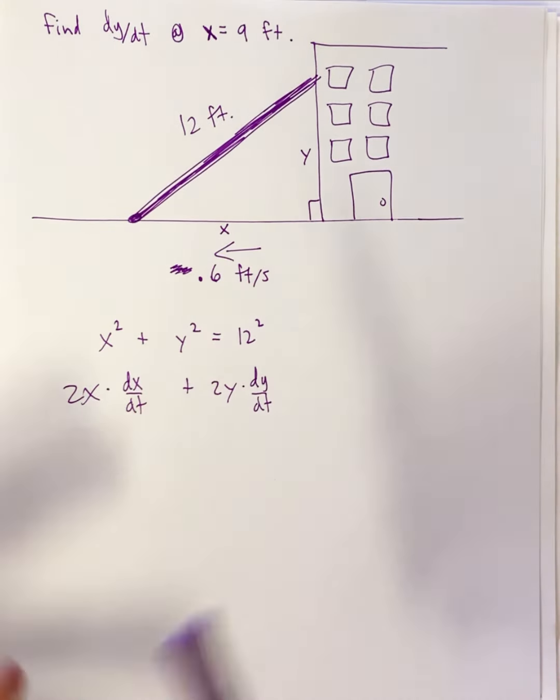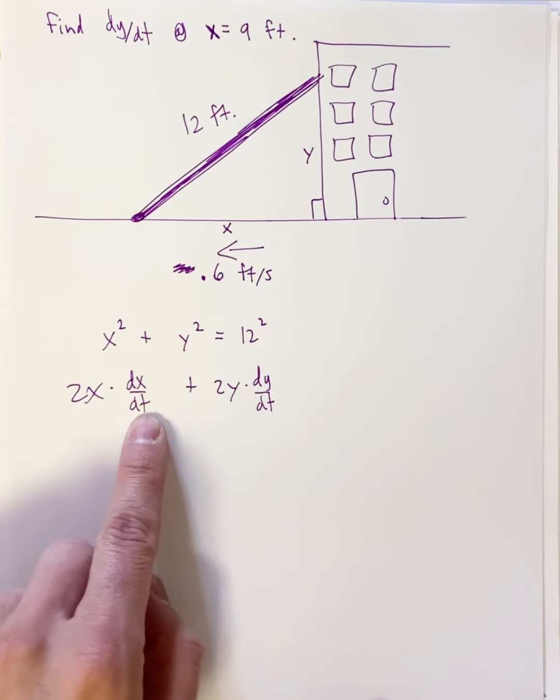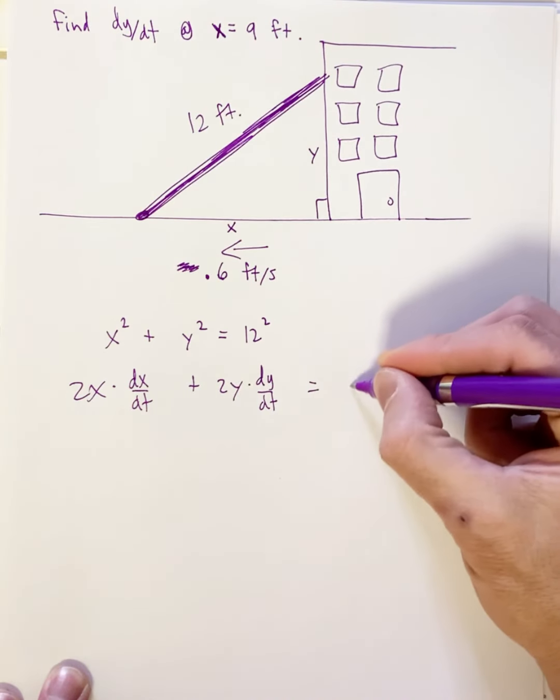Anytime there's a third component like time and you take a derivative, do the regular derivative but then go dx/dt or dy/dt or whatever the variable is. Equals the derivative of 144 is zero.